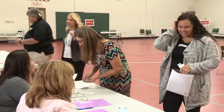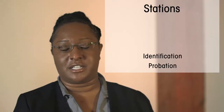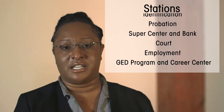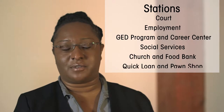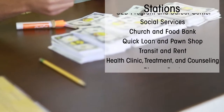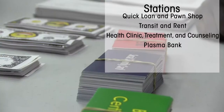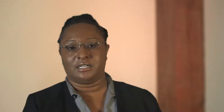You can craft the stations to your specific area, but examples include identification, probation, super center and bank, court, employment, a GED program and career center, social services, a church and food bank, quick loan and pawn shop, transit and rent, health clinic, treatment and counseling, and a plasma bank.